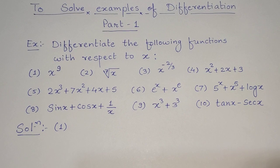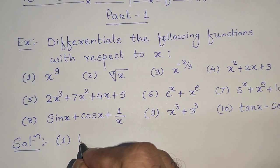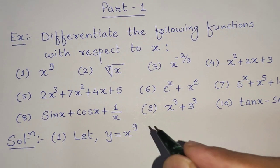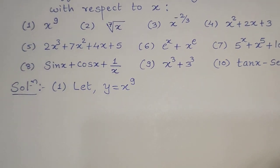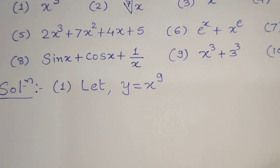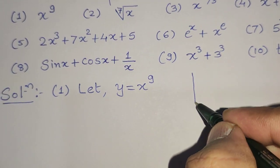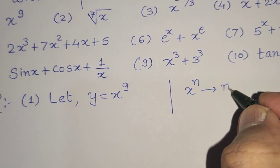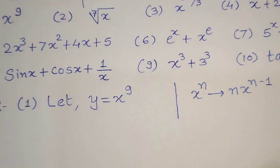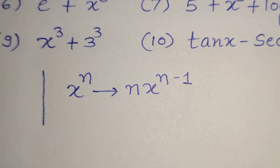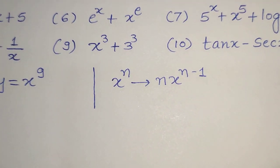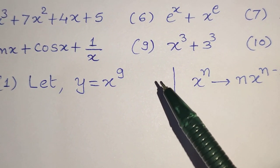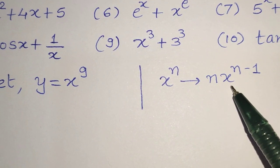To begin with the first example, we consider x raised to 9 as y. Let y equal x raised to 9. The formula for differentiation is: the derivative of x raised to n is n times x raised to n minus 1. In our case, n is 9, so the derivative is 9 times x raised to 9 minus 1.